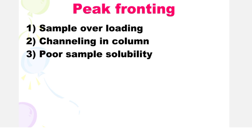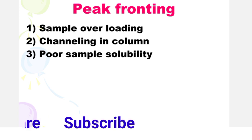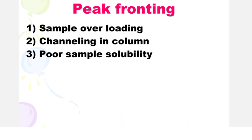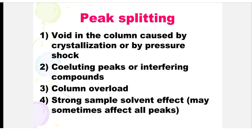Peak tailing also occurs when some chelating compounds show a singular tendency to adsorb to the stationary phase, and when there is sample overloading. Next is peak fronting; peak fronting is due to sample overloading, channeling in the column, and poor sample solubility.